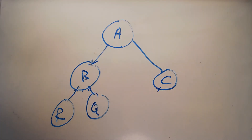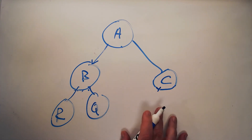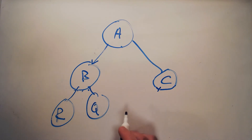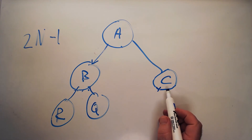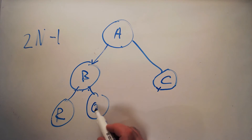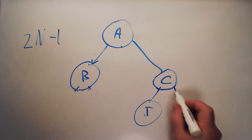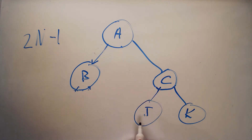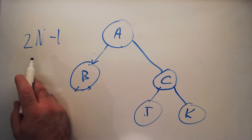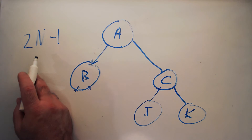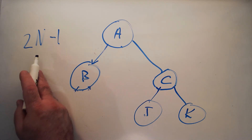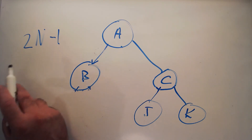We can look at another property: the total number of nodes in a strictly binary tree is 2n minus 1, where n is the number of leaves. Here there are 3 leaves, so 2 times 3 is 6 minus 1 is 5 — and counting confirms 5 nodes. This is more generalizable: it's not just for almost complete trees, but is a formula describing the number of nodes in any strictly binary tree.